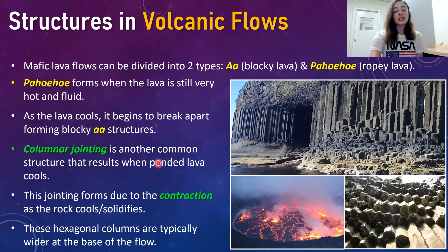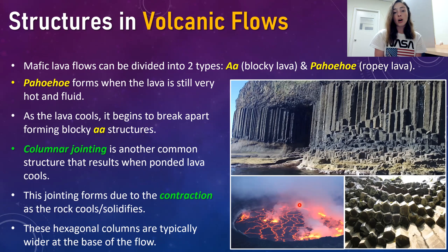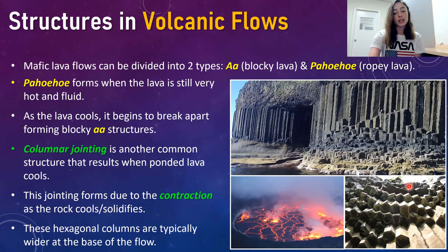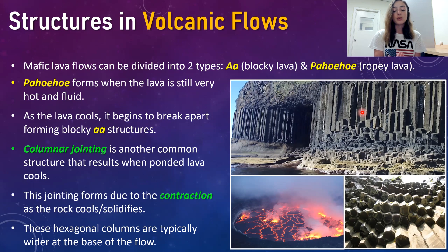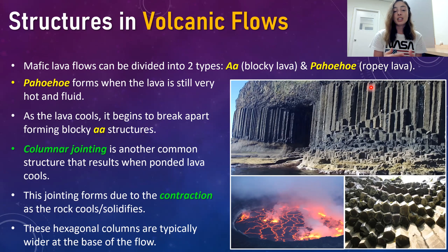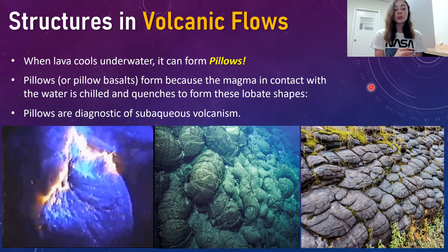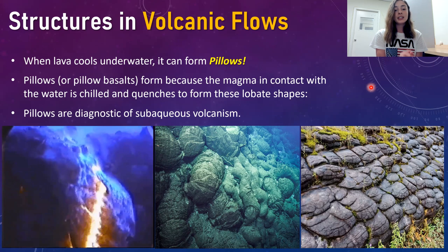Another common mafic volcanic structure is columnar jointing. It results when ponded lava cools — most often when lava goes into a low area, ponds, and then starts to cool. As it contracts, jointing forms, typically in a hexagonal structure, giving you this hexagonal columnar jointing. These structures aren't just pretty to look at — they're also helpful for identifying the base and top of the flow. Columns are typically wider at the base and thinner at the top of the lava flow.